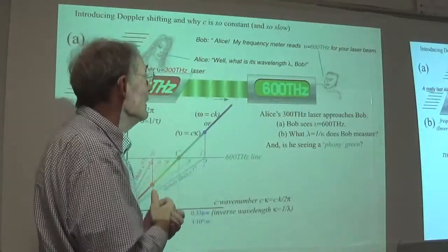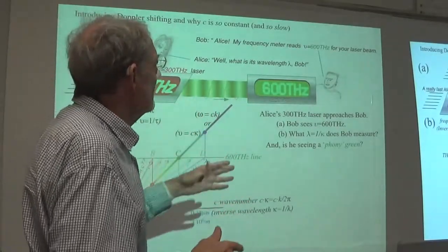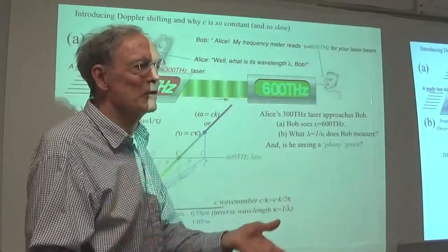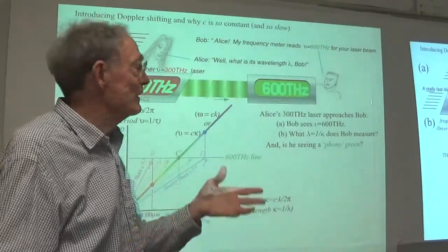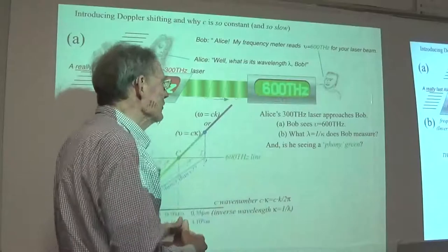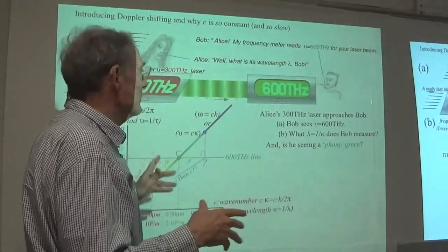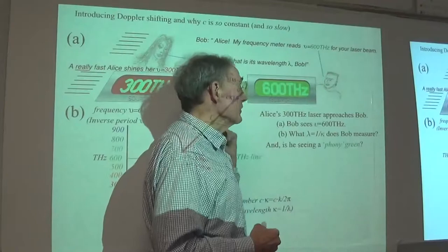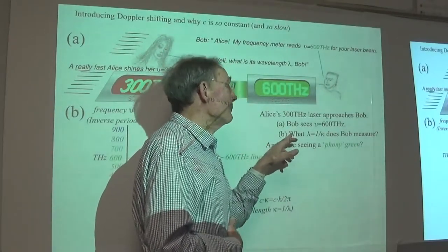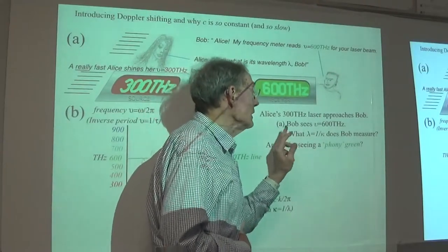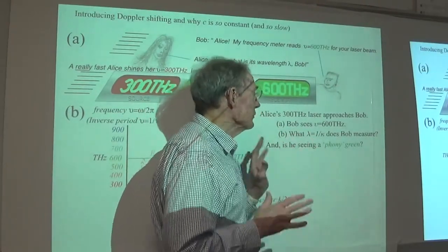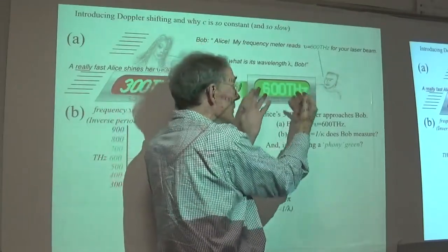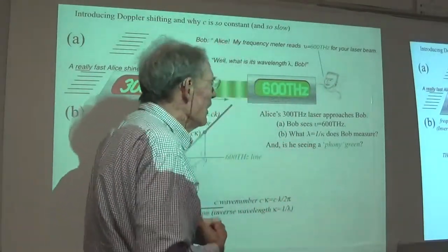She calls him up - what do you got? Oh, it's still your beautiful blue-green, 600 terahertz. So as Alice's laser approaches Bob, he sees 600 terahertz because she's undopplered it. The question is: what lambda, what one over kappa does Bob measure? That's a separate reading. This is a time measurement; space measurement is different. Maybe something weird is going on. Is he seeing a phony green? This thing is produced by 300 terahertz coming at him. How many kinds of green are there in the vacuum of the universe? How many ways can the universe hold 600 terahertz?